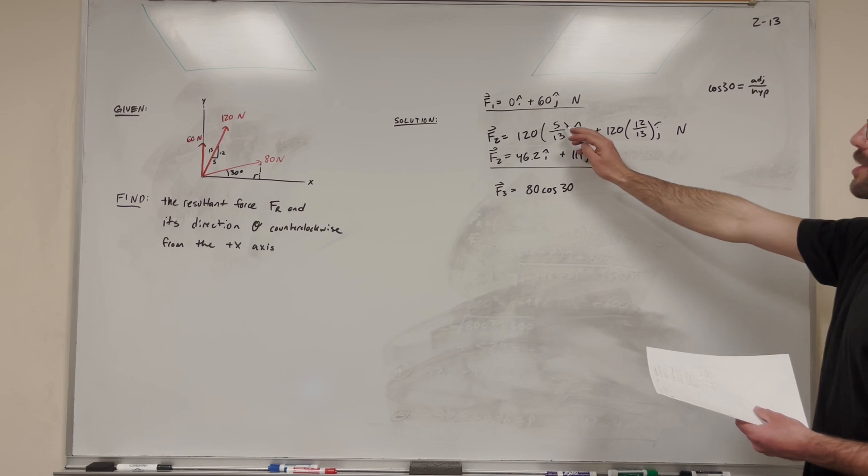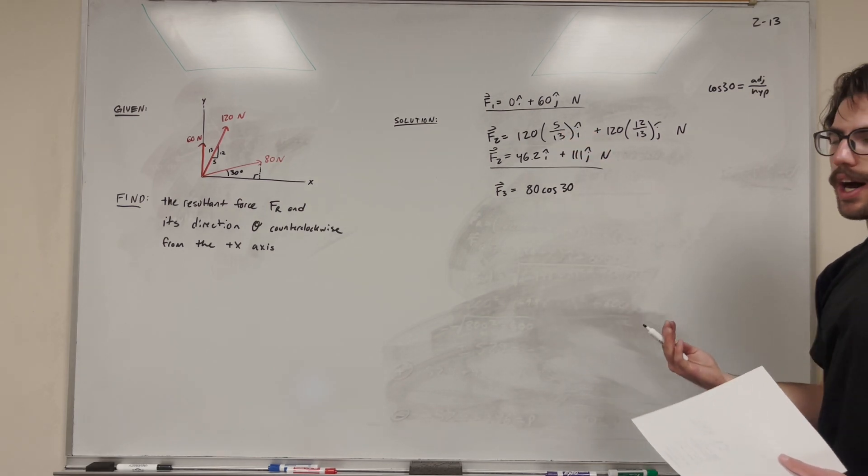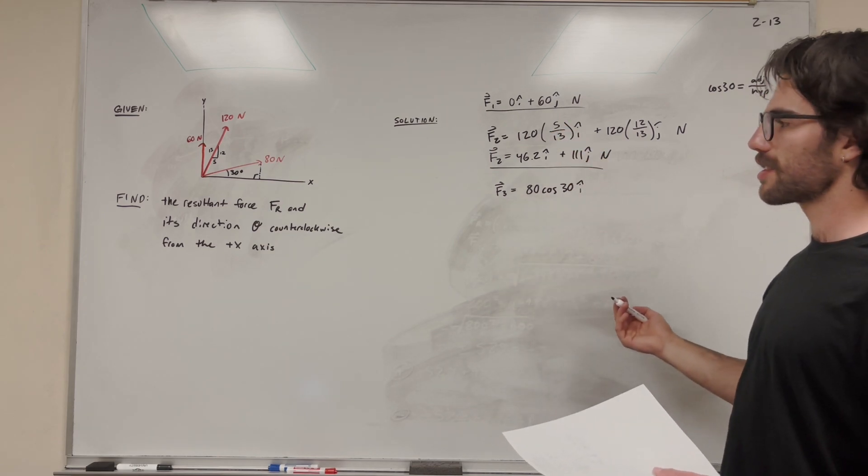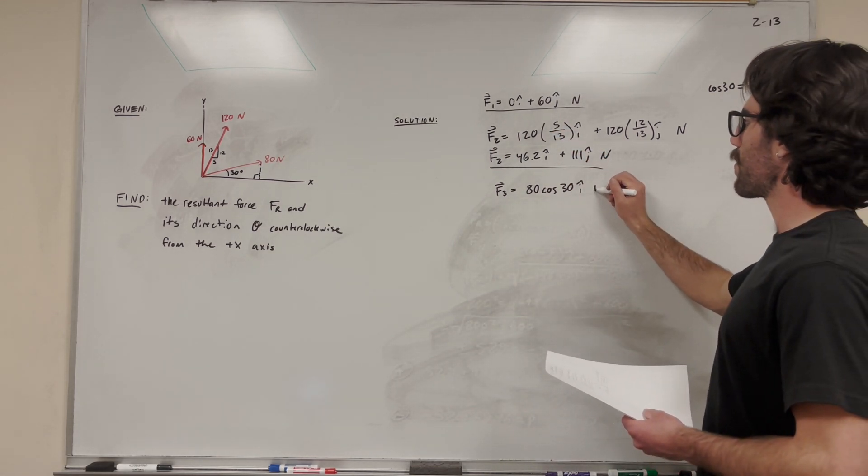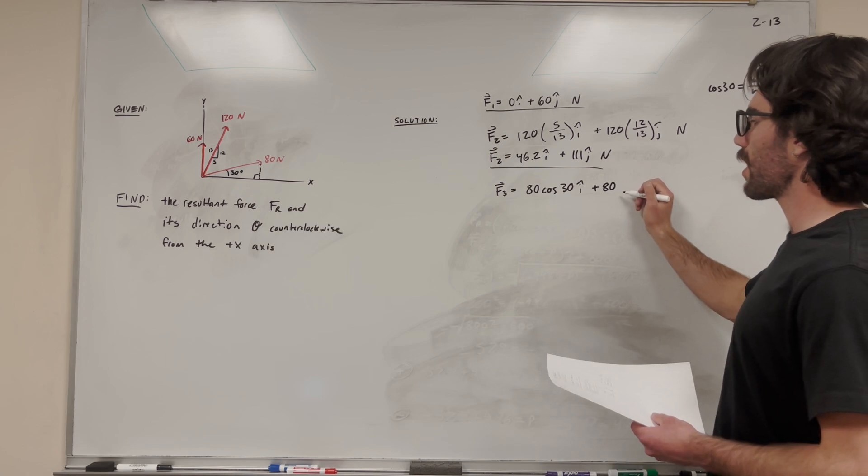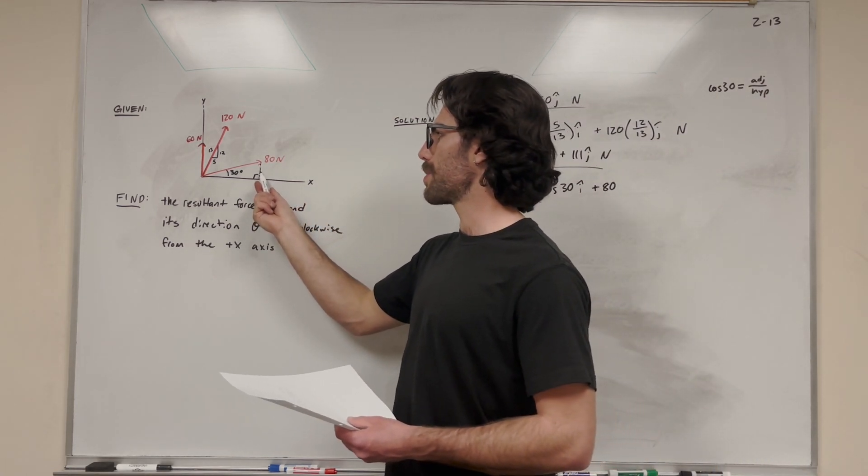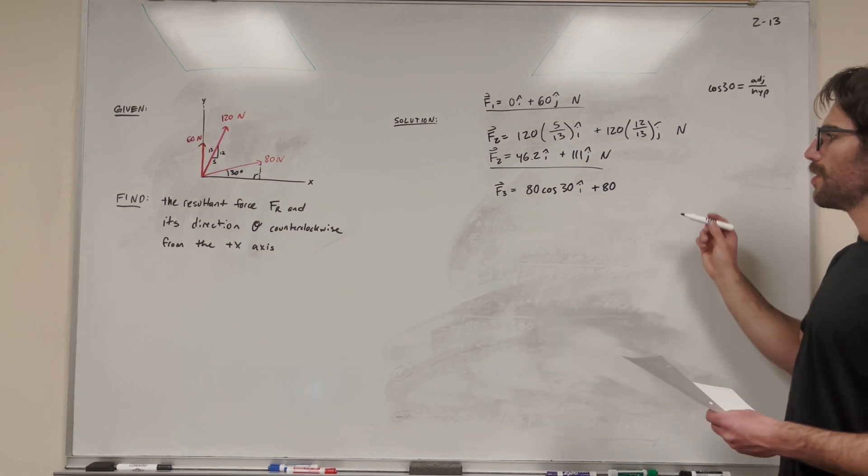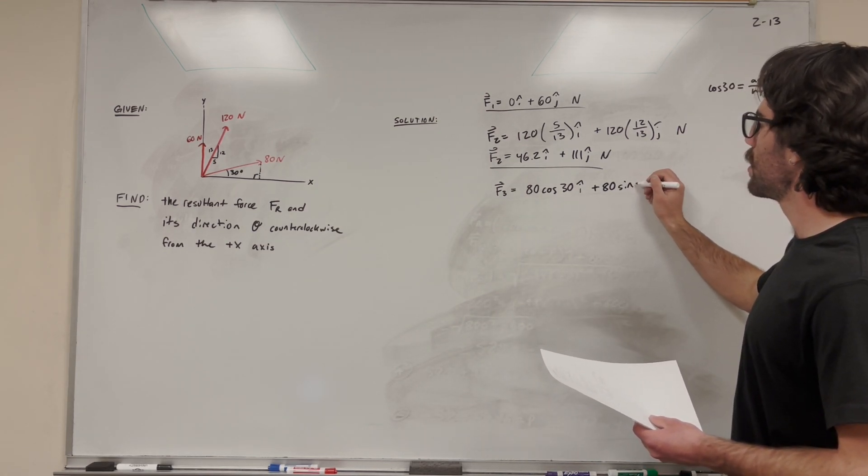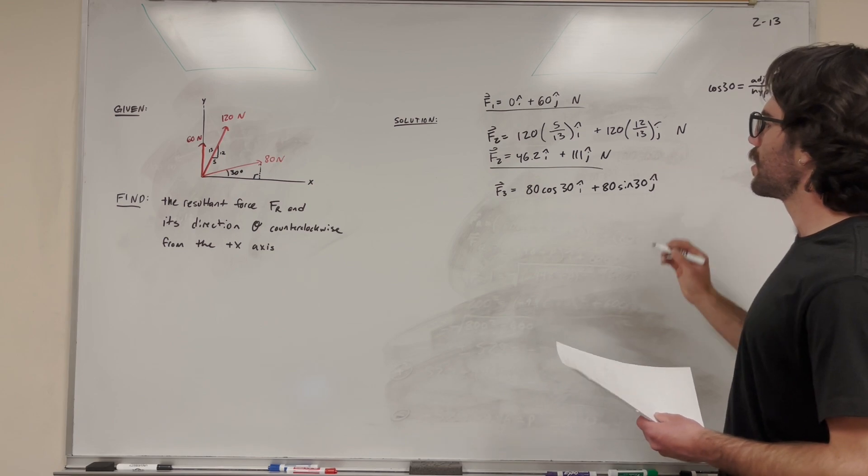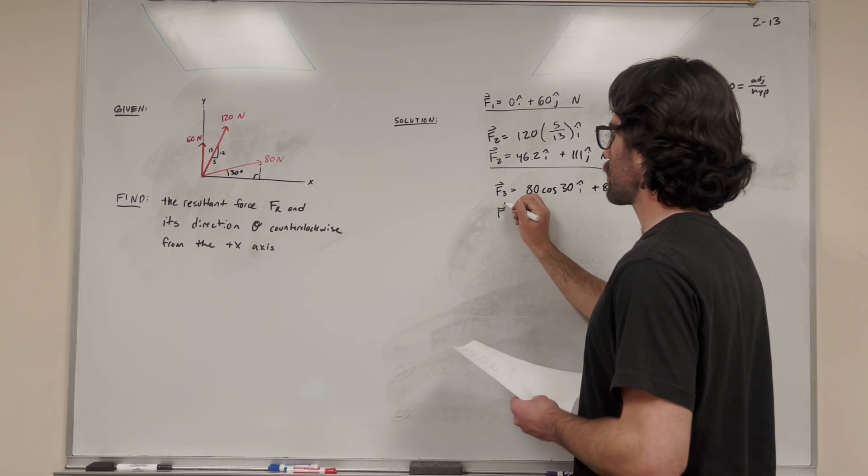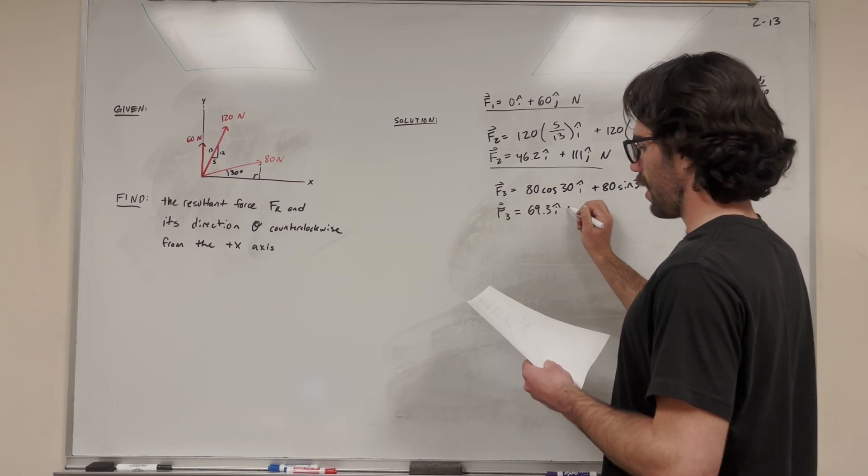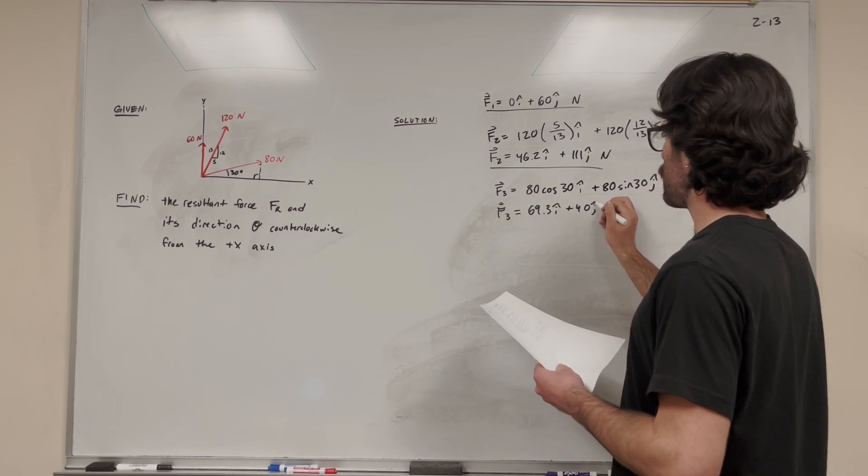Similarly, that's what the ratio we did here was, the adjacent over hypotenuse. So that's why it's basically the same thing when we attach a cosine of 30 as this 5 thirteenths. Similar thing. So now let's do it for the next part. So we're doing the y component, so we're looking for the opposite. And when we do opposite, remember that's SOHCAHTOA, so sine opposite hypotenuse. So when we want the opposite, we want the sine of 30. And there we go, so let's do the math on this. This is equal to 69.3i plus 40j newtons.